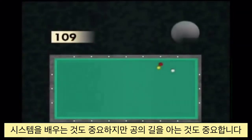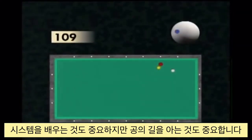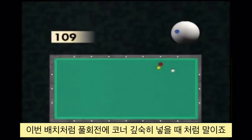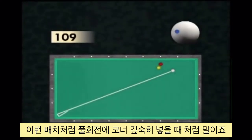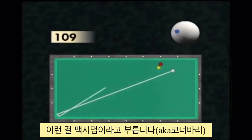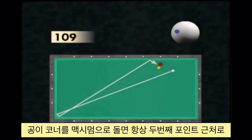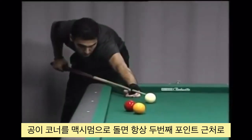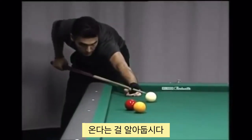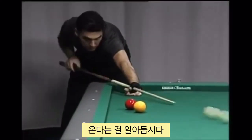Besides the learning of systems, the player needs to know his courses. When he plays here, full corner with maximum English — this is called a maximum. Please note that when leaving the corner, you always arrive in the zone close to the second diamond.